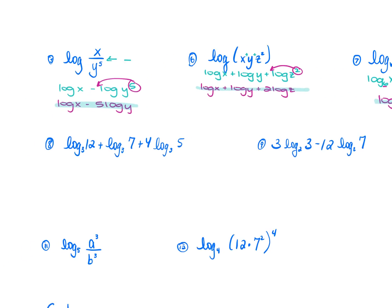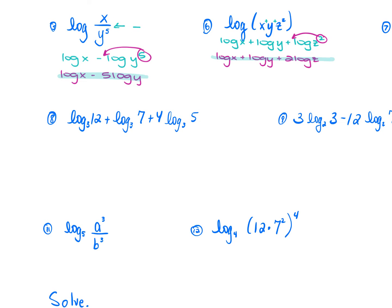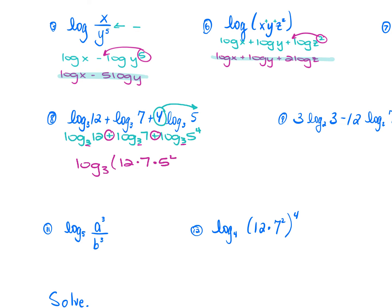For number 8: log₃(12) + log₃(7) + 4·log₃(5). First, the coefficient 4 becomes the power on 5. So you have log₃(12) + log₃(7) + log₃(5⁴). Because all bases are 3 and you have addition throughout, multiply the arguments: log₃(12·7·5⁴). You don't need to multiply out 12×7 or 5⁴.